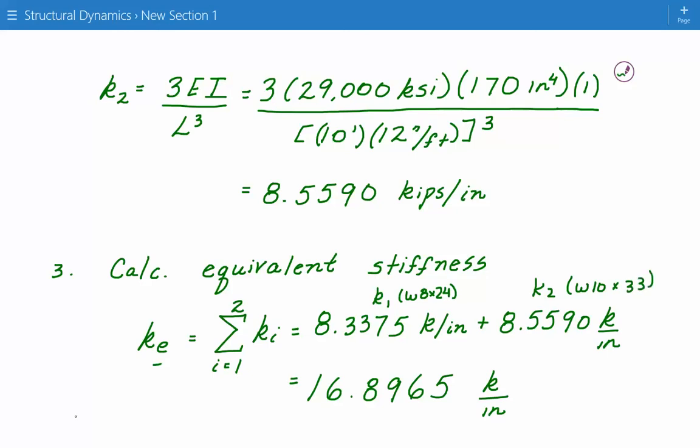So we just add them together, 8.3375 plus 8.5590 kips per inch. And we get 16.8965 kips per inch.